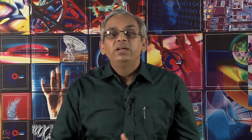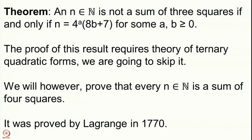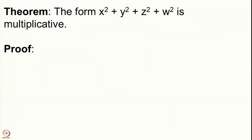We are not going to study sums of 3 squares further. Instead, we are going to study Lagrange's theorem — one step further: every natural number is a sum of 4 squares. This interesting result was proved by Lagrange in 1770. It was stated earlier by other mathematicians, but Lagrange gave the proof for the first time, so we know it as Lagrange's theorem. Here also we have the multiplicative property: the form x² + y² + z² + w² is multiplicative.